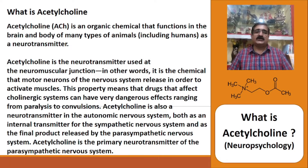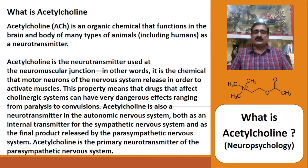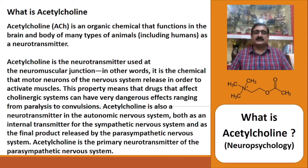Acetylcholine is also a neurotransmitter in the autonomic nervous system, both as an internal transmitter for the sympathetic nervous system and as the final product released by the parasympathetic nervous system. Importantly, acetylcholine is the primary neurotransmitter of the parasympathetic nervous system.